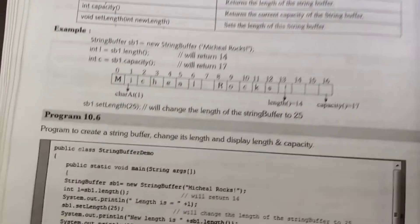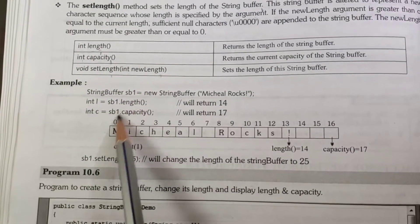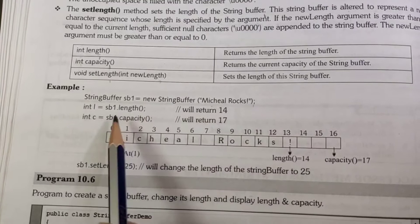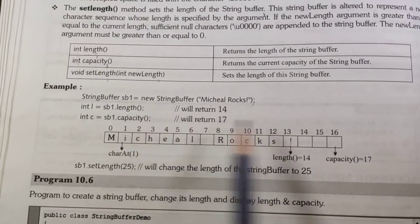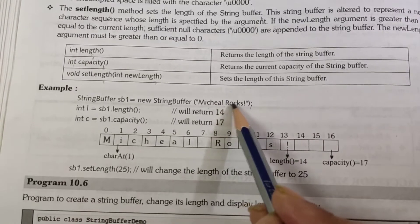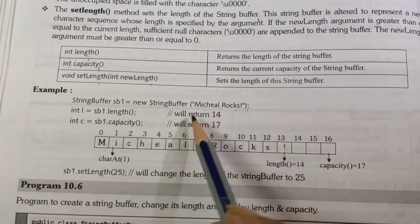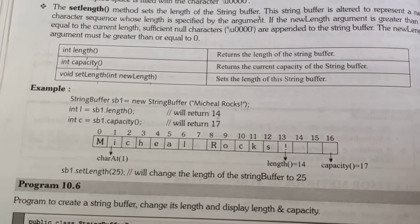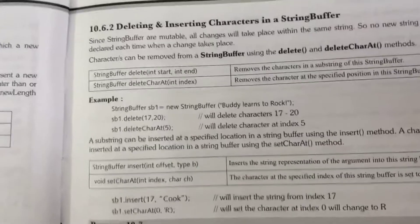Let's understand with the help of an example. The string is "michael rocks" and we need to check the length of this StringBuffer. Counting the characters: 1 2 3 4 5 6 7 8 9 10 11 12 13 14 — yes, it will return length as 14. The capacity is 17, which is 14 plus the default 16 resolved to 17 based on the initial buffer.